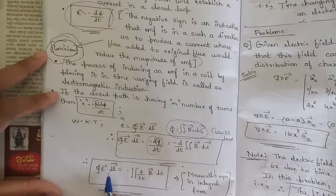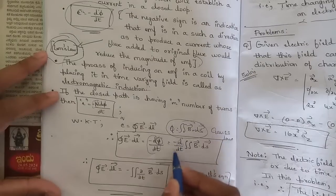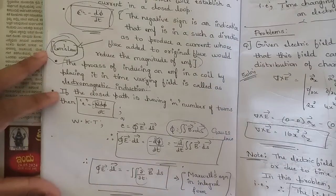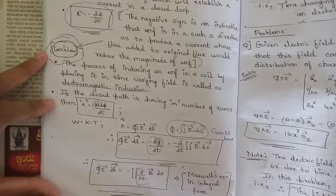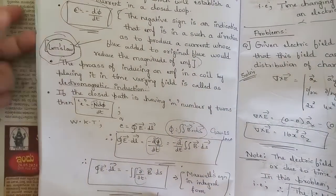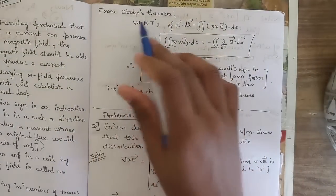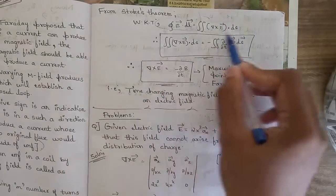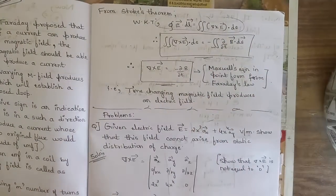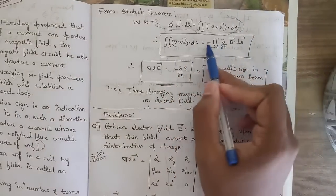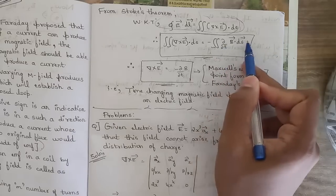The equation ∮E·dl = -∯(∂B/∂t)·ds is called Maxwell's equation in integral form. From Faraday's law we obtain one Maxwell's equation in integral form. To convert this into point form, we apply Stokes' theorem: ∮E·dl = ∯(∇×E)·ds. Substituting, we get ∯(∇×E)·ds = -∯(∂B/∂t)·ds.